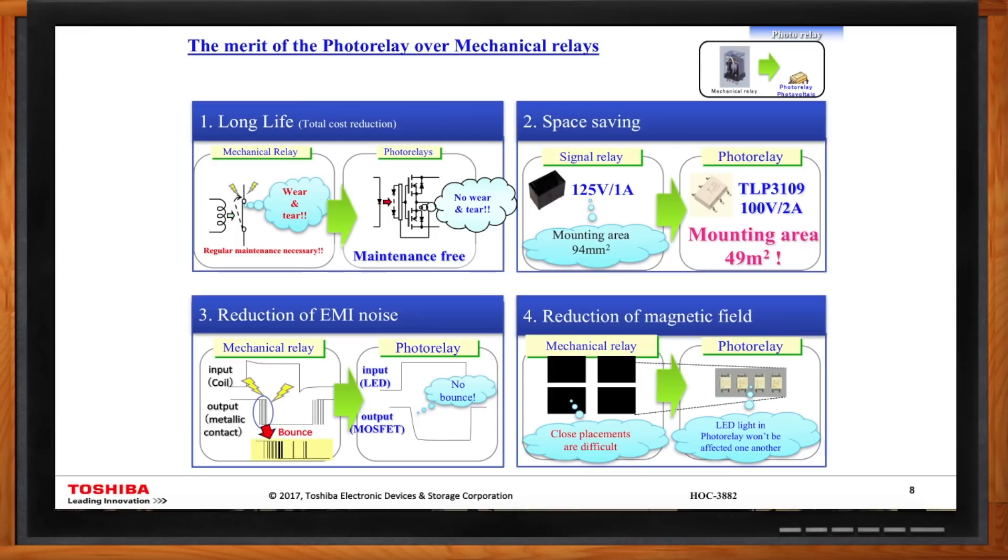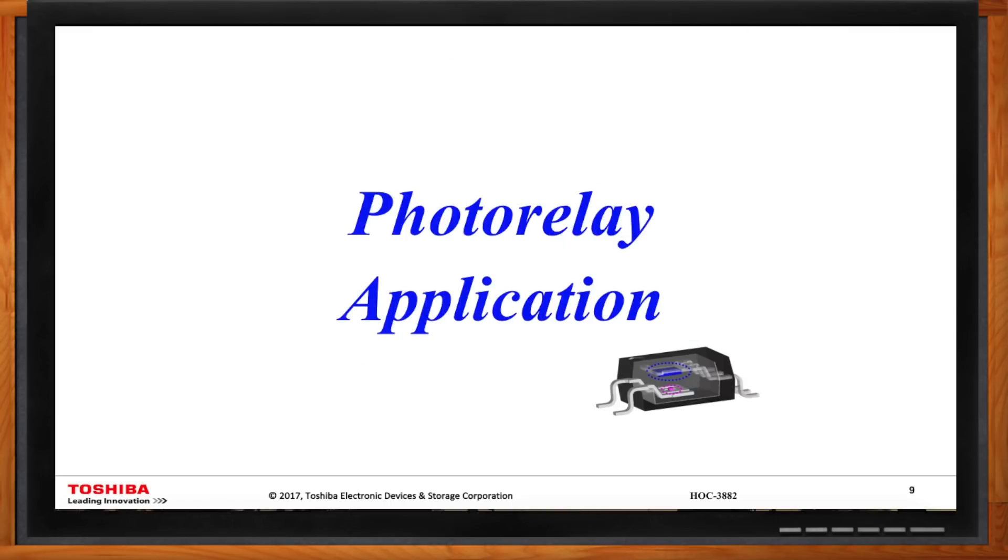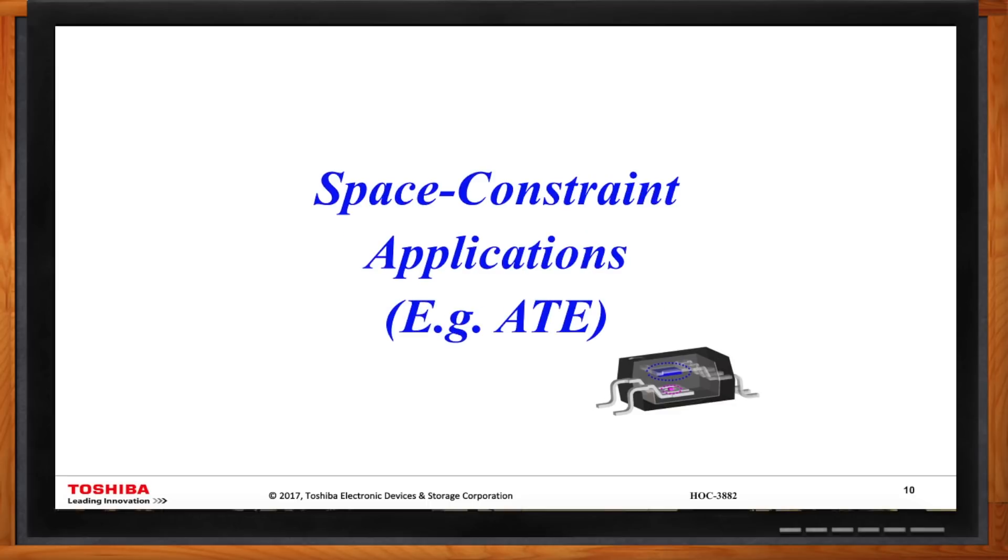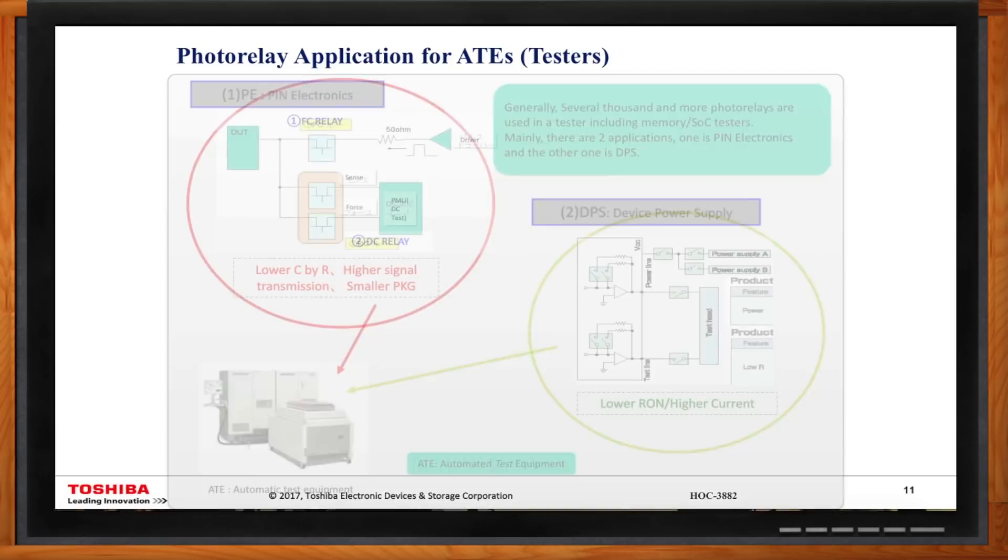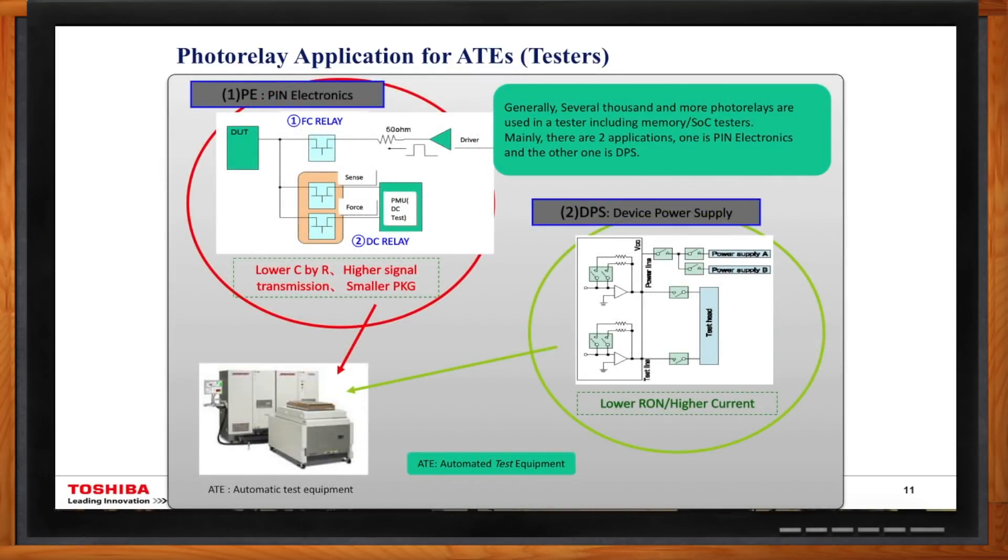Yeah. One of the very common applications is ATE, automatic test equipment. In ATE application, typically they use many, many photorelays. And that's where small size photorelays really come to bring a lot of advantages to designers. And in ATE application, basically there are two areas that you want to use photorelays, in the pin electronic side and also on the device power supply side. So, you mentioned the pin electronic side. The testers that I've dealt with have a lot of pins. So, let's talk about where those relays fit in with all those pins.